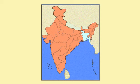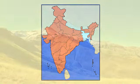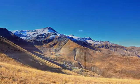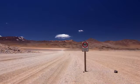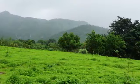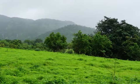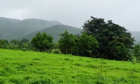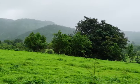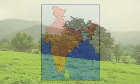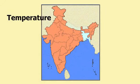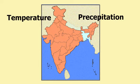India has monsoon type of climate. In spite of an overall unity in the general pattern, there are clear regional variations that can be seen in climatic conditions within the country. Let us take two important elements — temperature and precipitation — and examine how they vary from place to place and season to season.